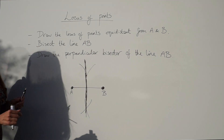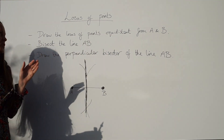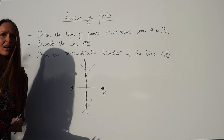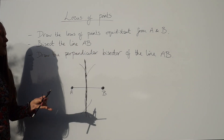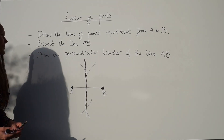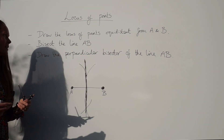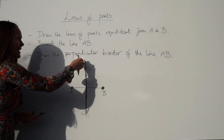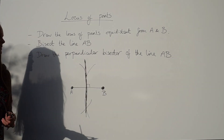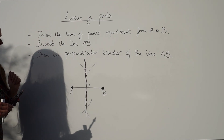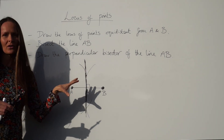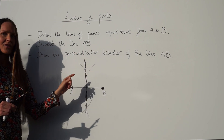That line is the locus of points — it is always equidistant from A and B, meaning it's always the same distance to A as it is from B, no matter where you are along that line. Bisecting the line AB means cutting it in half, which we have done. Perpendicular means at 90 degrees, and this angle is 90 degrees. On your exam, be careful to leave the arcs on your paper, as you often get marks for having them there.